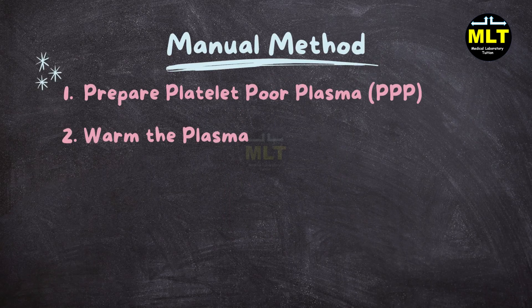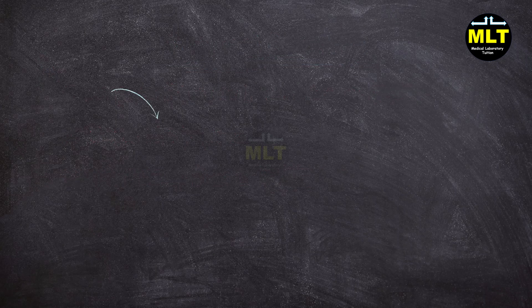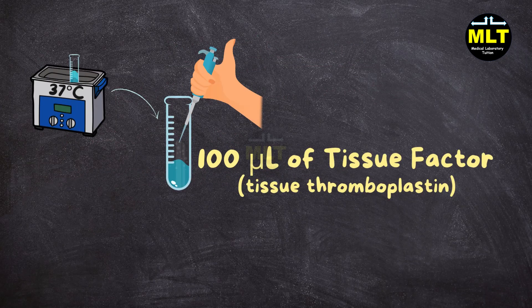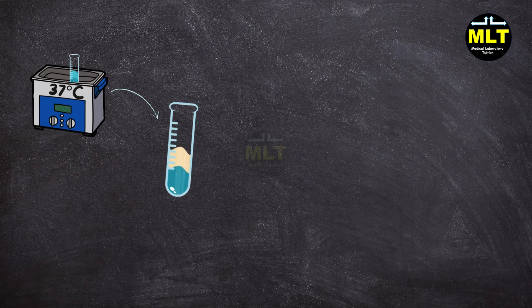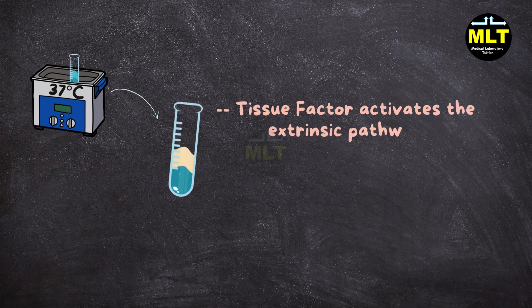Step 3: Add tissue factor (TF). Once warmed, add 100 µL of tissue factor (tissue thromboplastin) to the plasma. Mix it and incubate for 1 to 2 minutes. Tissue factor activates the extrinsic pathway.